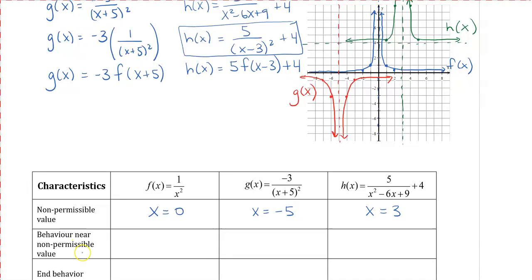For h(x), looking at the rewritten form, we can see that x = 3 is the non-permissible value, since that makes the denominator zero.